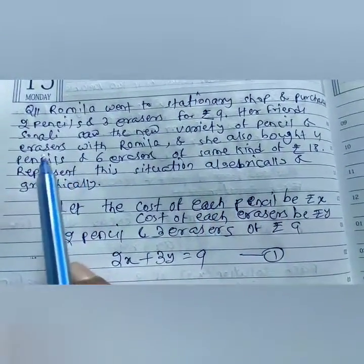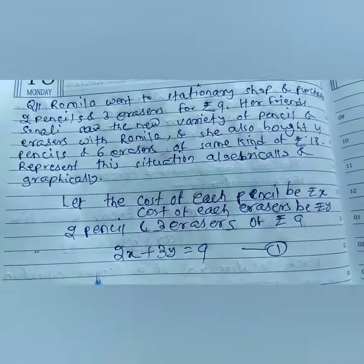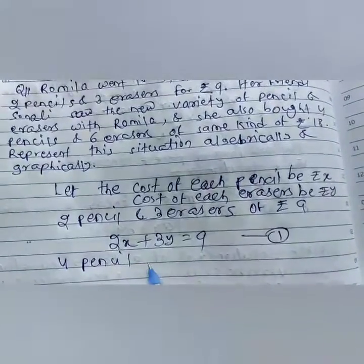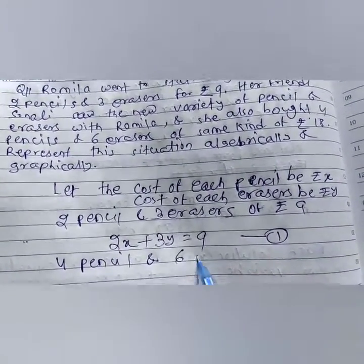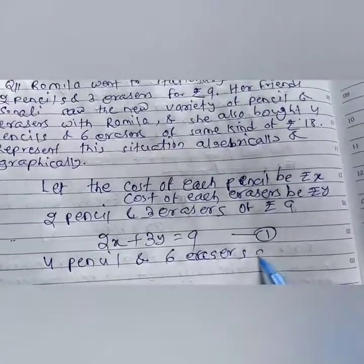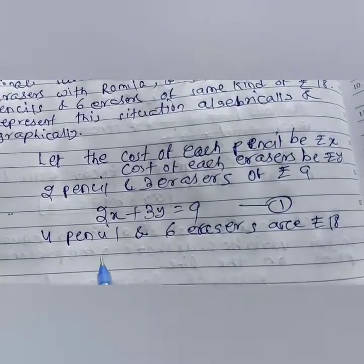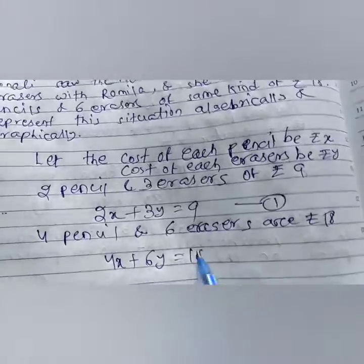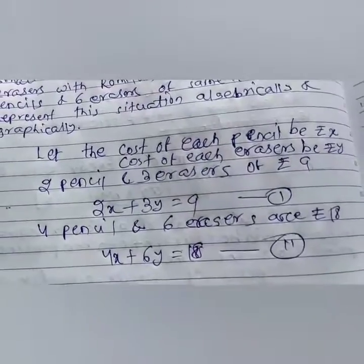For Sonali, 4 pencils and 6 erasers for 18 rupees. So the equation becomes: 4x plus 6y equals to 18 — that is equation 2. So we have expressed this situation algebraically. Now let's solve it graphically.